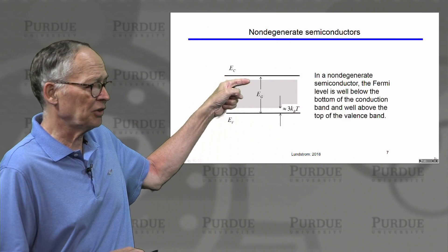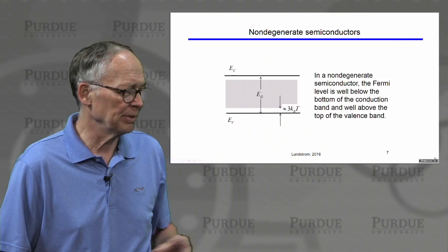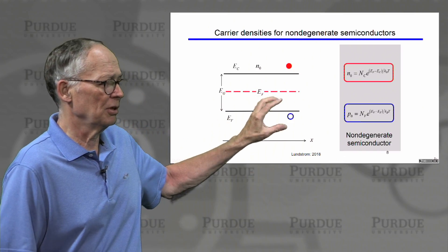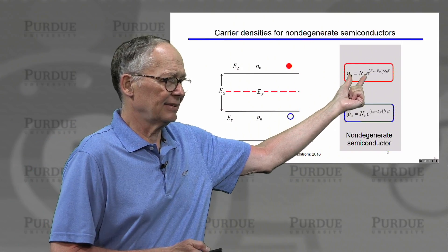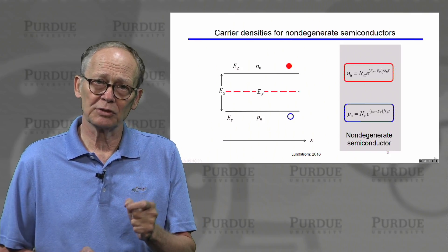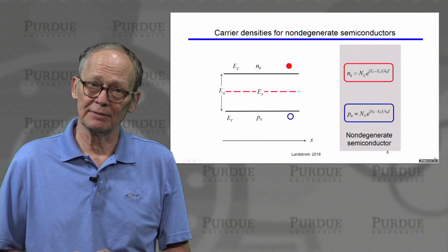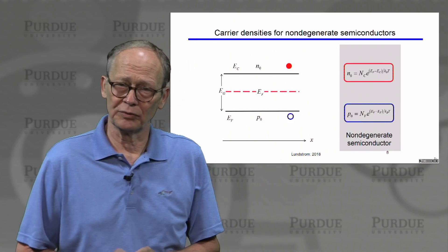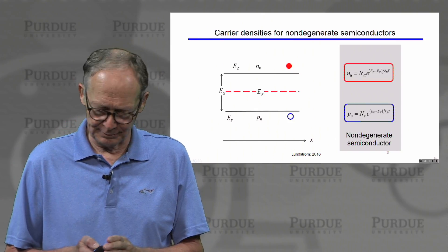To remind you, a non-degenerate semiconductor is one where the Fermi level stays inside the band gap and doesn't get too close to the bottom of the conduction band or the top of the valence band. To summarize: the electron density is the effective density of states times the exponential of (Fermi level minus bottom of the conduction band) over kT. The Fermi level goes in the numerator because the higher the Fermi level, the more electrons. The hole density is the effective density of states for the valence band — which depends on the valence band effective mass — times the exponential of (top of the valence band minus Fermi energy) over kT. The lower the Fermi energy, the more probable it is that states in the valence band are empty and we have holes.